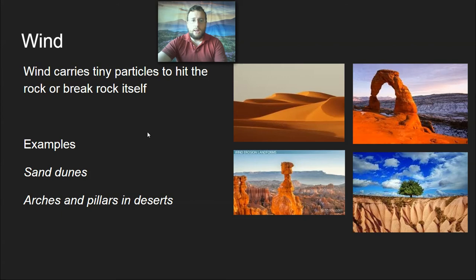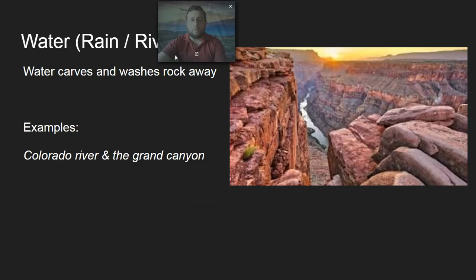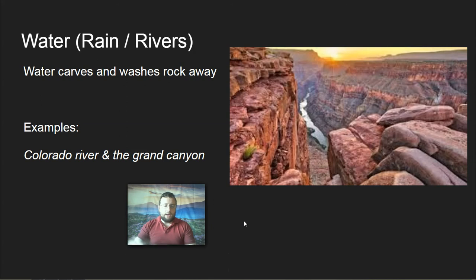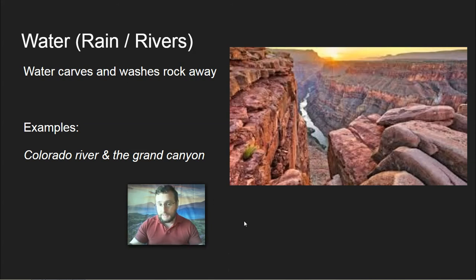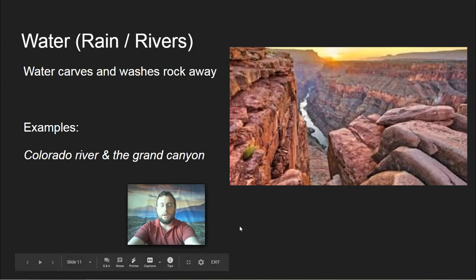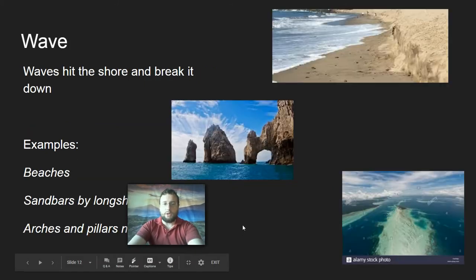Water erosion is when rain and rivers carve through the landscape little by little, drop by drop, creating great canyons. It washes away rock, which ends up being deposited somewhere else, as discussed in the objective two video. The Grand Canyon is a great example of water erosion.